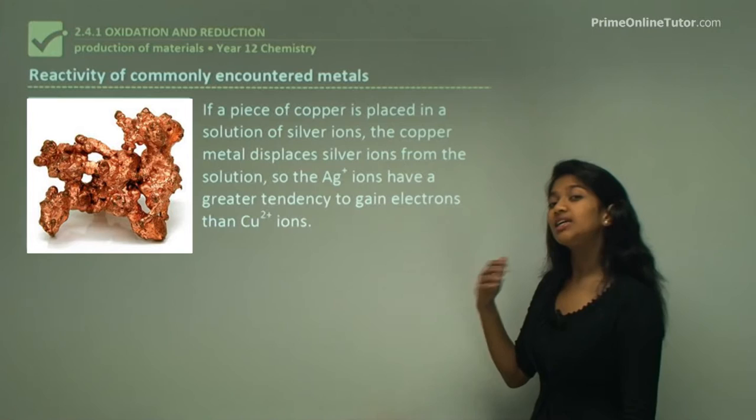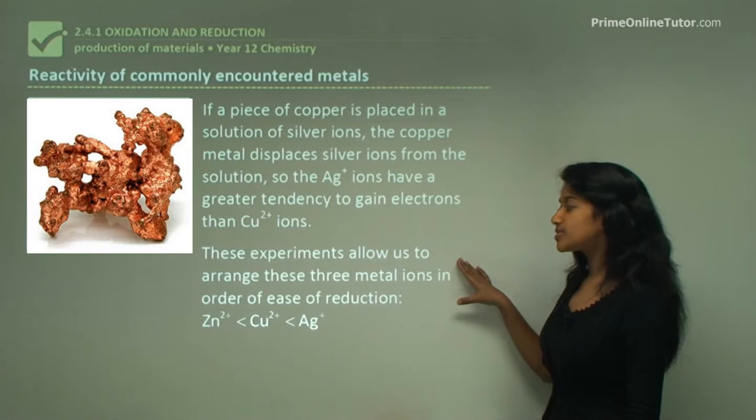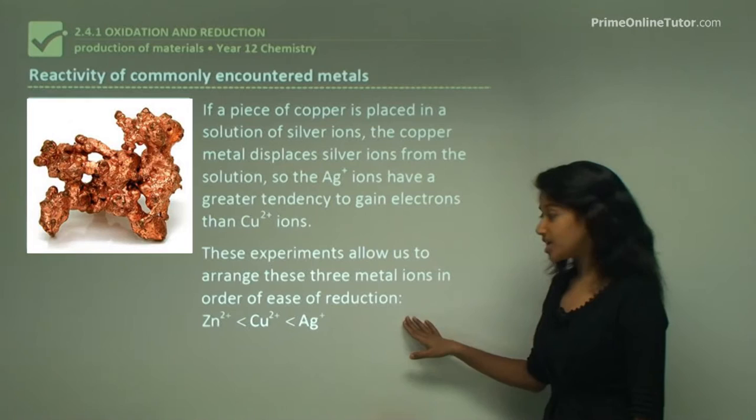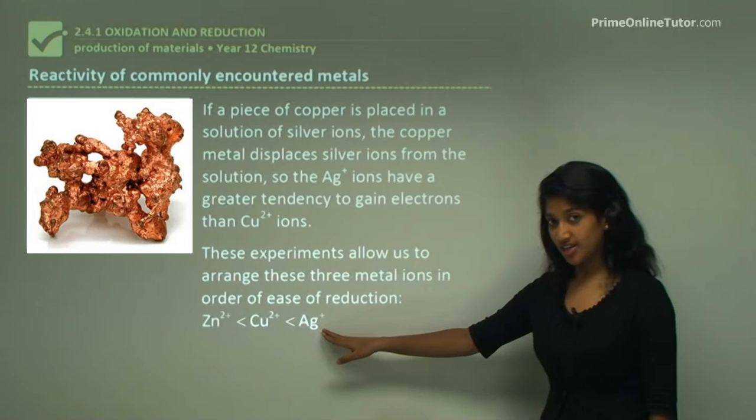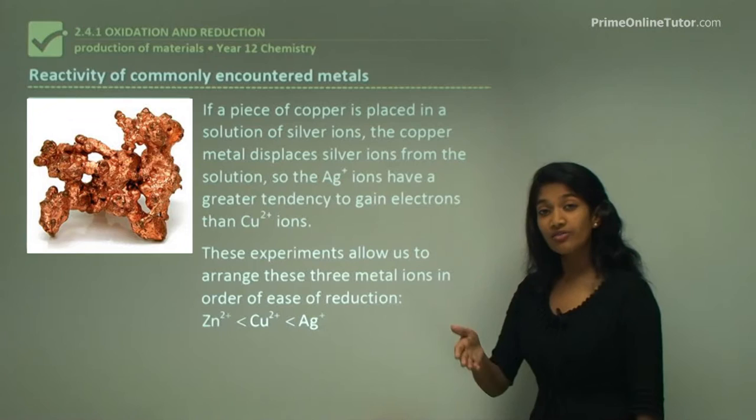These experiments allow us to arrange metal ions in order of ease of reduction. Zinc ions are the easiest to reduce, followed by copper ions, then silver ions. The standard potentials table at the back of your periodic table has a larger view of this activity series with all the metals.